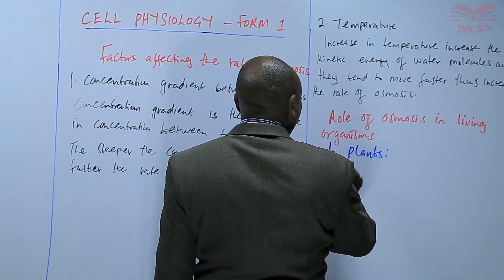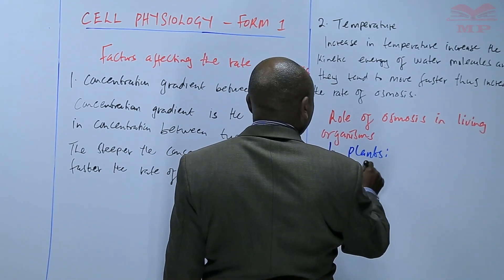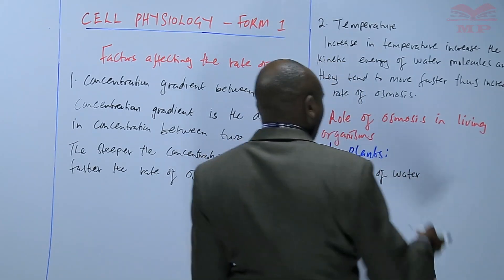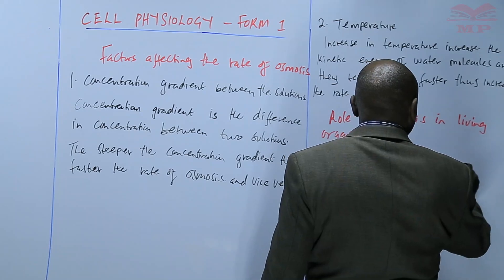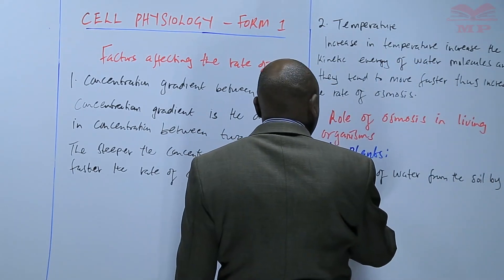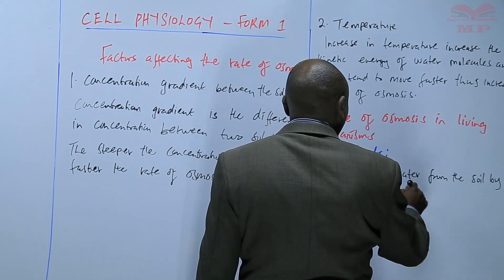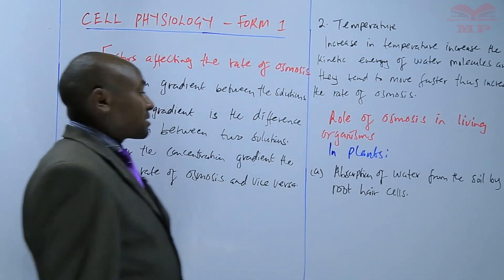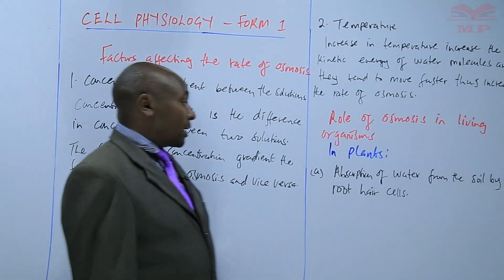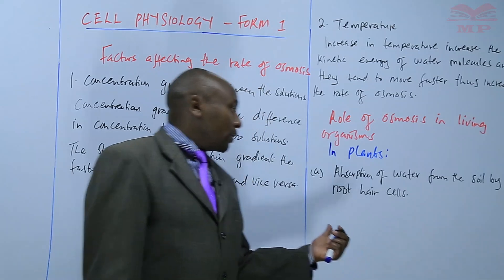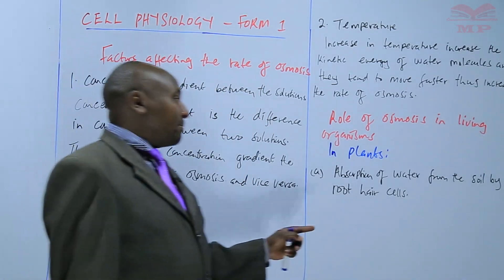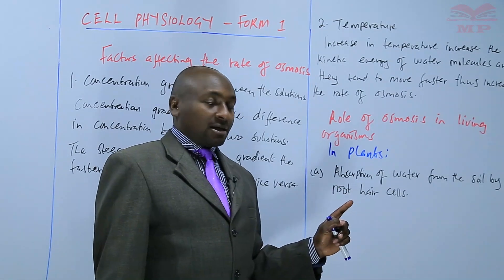We have absorption of water from the soil by root hair cells. That occurs by osmosis. So when plants absorb water from the soil by use of root hair cells, that requires osmosis. And remember, it's purely absorption of water, nothing else.